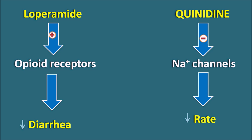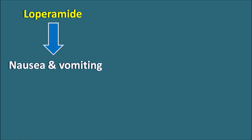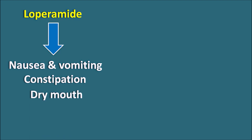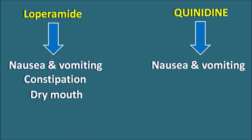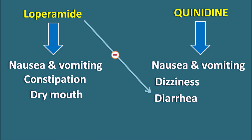Loperamide acts on opiate receptors present on nociceptive neurons, whereas quinidine acts on the heart to decrease the rate of contraction. Looking at pharmacological side effects: loperamide can stimulate the CTZ producing nausea and vomiting, and decreases GI motility causing constipation. Quinidine can also produce nausea, vomiting, dizziness, and diarrhea. Both drugs share nausea and vomiting as side effects, but this is common to many drugs and is not a significant interaction. Quinidine causes diarrhea whereas loperamide causes constipation, so loperamide can suppress quinidine-induced diarrhea when given concomitantly.